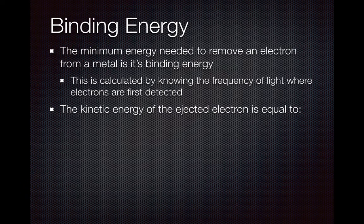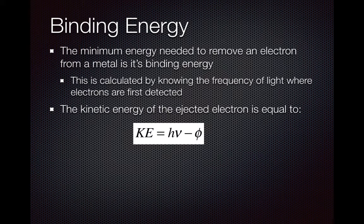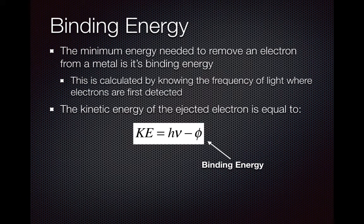We can also look at the kinetic energy of that ejected electron, and that's going to be equal to h-nu — the energy needed to remove that electron from the original frequency — minus the binding energy. So h-nu would be the applied energy. Binding energy, phi, is the energy required where the electron first came off. You essentially have the excess kinetic energy: applied energy minus what it took to get it off the metal.